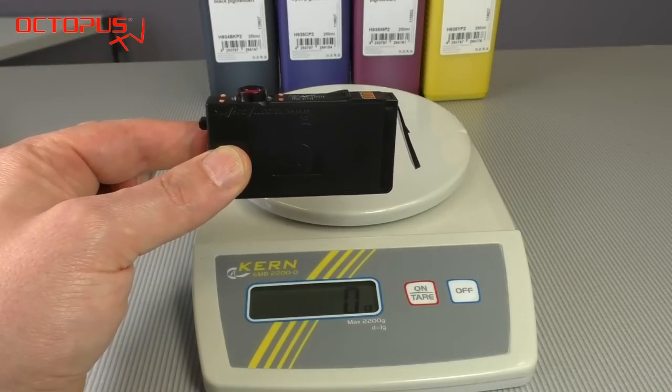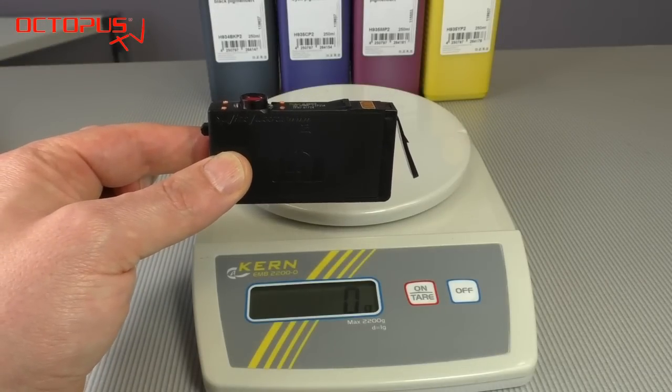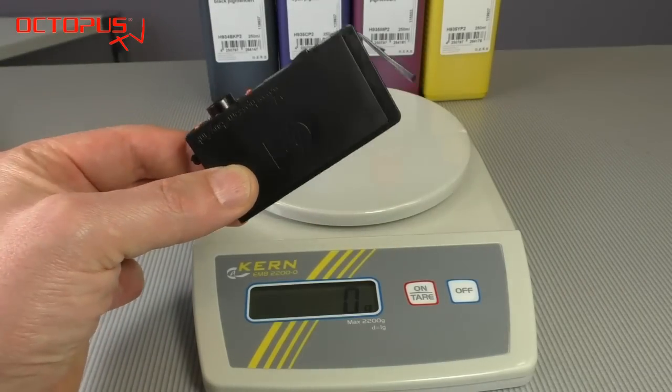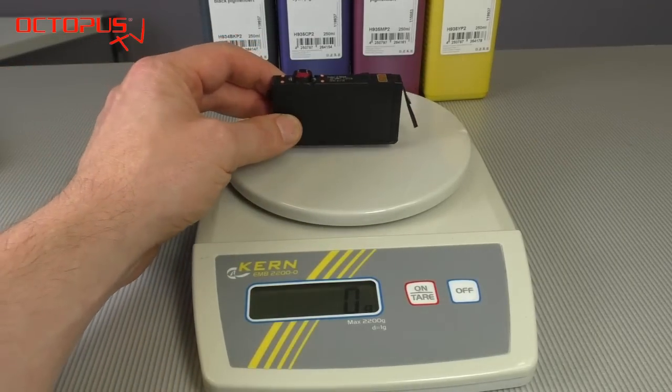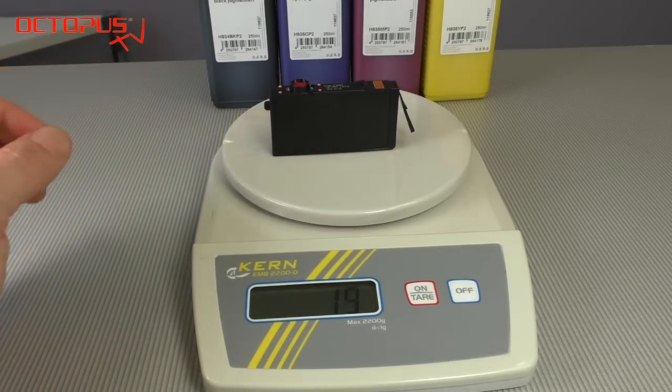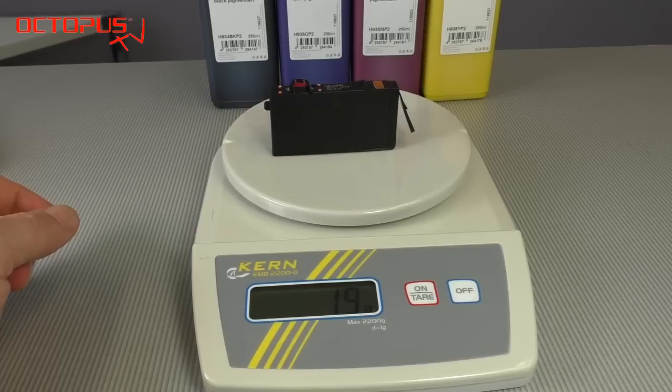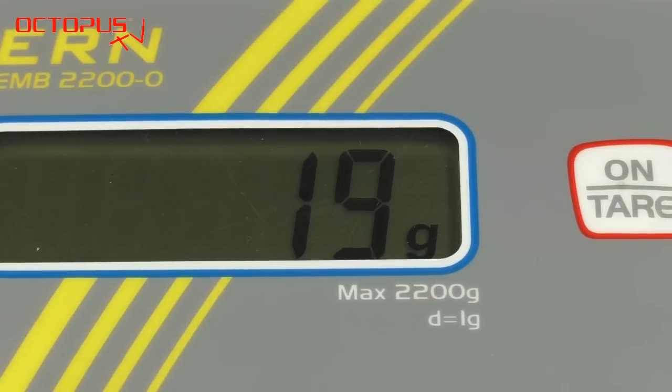When you have it available you can use a scale to measure the empty weight of your cartridge. In comparison to the full weight then you know how many grams of ink are missing in that cartridge. A standard yield HP 935 cartridge has a full weight of 24 grams and as you can see here our empty cartridge has a weight of 19 grams. So we know 5 grams of ink are missing in this cartridge.